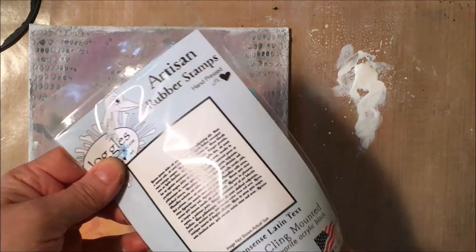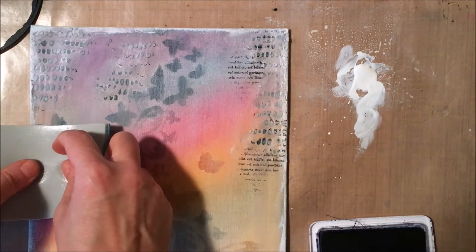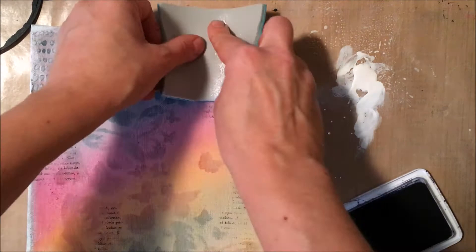And now I am using a script stamp from Joggles and still some of my black ink but just adding a little bit of that on top. And so this text stamp is so small and very subtle that I don't mind some of that black showing through but just not quite as intense as it was before.